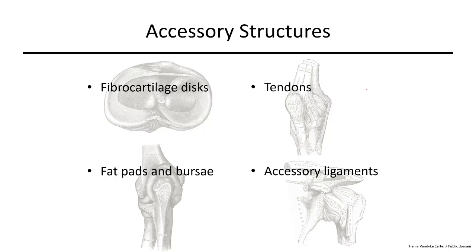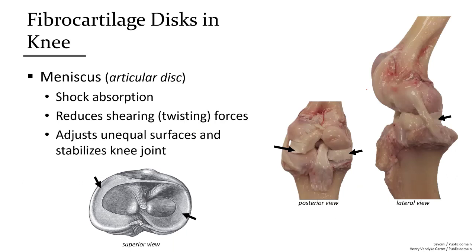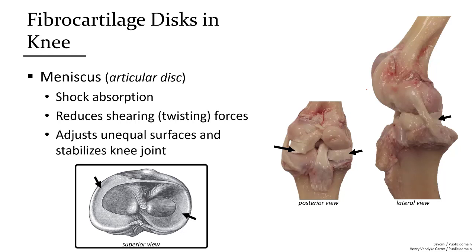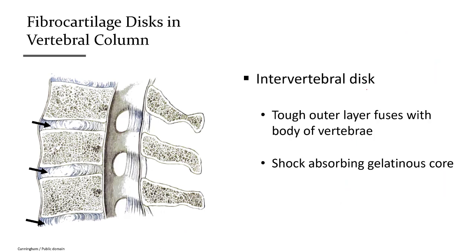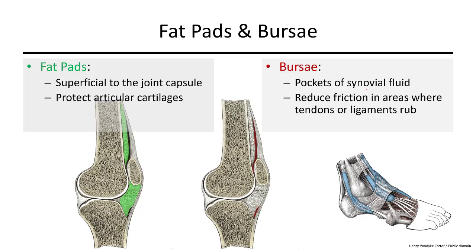Synovial joints have one or more accessory structures for support or protection. In the knee joint we have two fibrocartilage discs called the meniscus, used to cup the rounded distal surfaces of the femur, stabilizing the joint and aiding in shock absorption. These discs are wide around the periphery and taper toward the center. More uniform fibrocartilage discs are found between adjacent vertebrae for weight distribution and shock absorption. Fat pads around some joints absorb and distribute force. Bursa are small pillows of synovial fluid surrounded by a tough membrane found in areas of high motion to prevent friction.